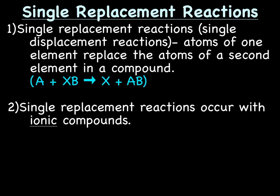Single replacement reactions, also known as single displacement reactions - atoms of one element replace the atoms of a second element in a compound. The general formula is A plus XB produces X plus AB. So you have a single element and a compound, and the single element switches places with one of the atoms in the compound.